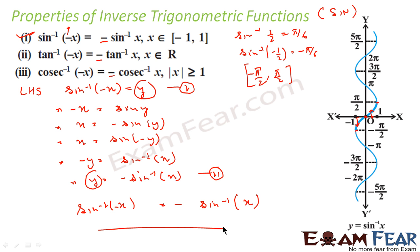That completes the mathematical proof. Logically, since the principal interval's center is (0, 0), taking −1/2 gives −π/6 and taking −1/√2 gives −π/4. This is all the sin family: sin⁻¹(−x) = −sin⁻¹(x).